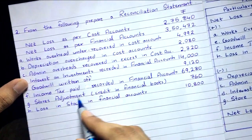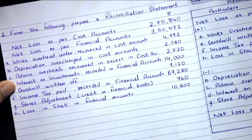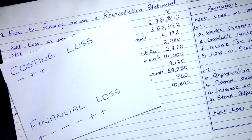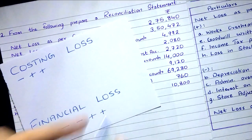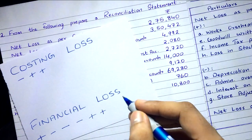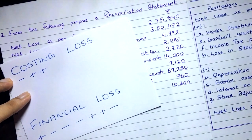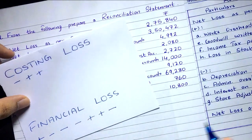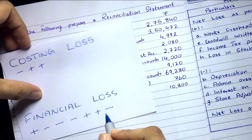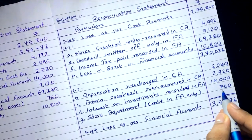Transaction G: stores adjustment — credit in financial books, 760. They've told us it's a credit, so this is income. Income recorded in financial accounts. Income and loss have a negative relationship — if income is recorded, loss is less. So the impact is minus. This transaction is subtracted. Stores adjustment, credit in financial accounts only: 760.